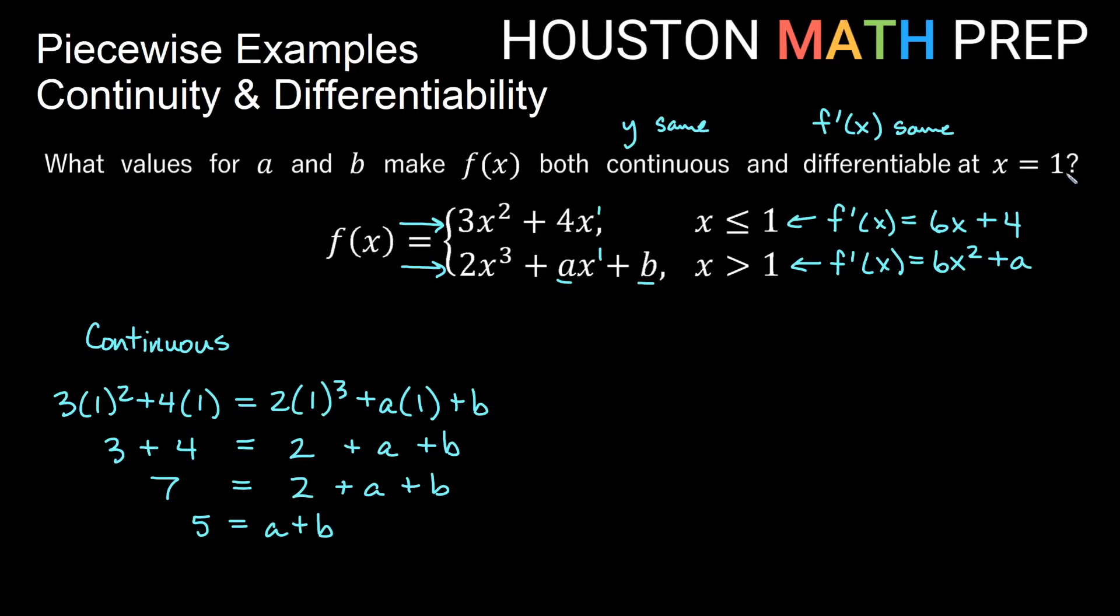Now we want these to be the same at x equals 1, and that will give us that the function is also differentiable. So doing the differentiable part, plugging in x equals 1 to both of these things here. So we would get 6 times 1 plus 4 is equal to 6 times 1 squared plus a. I don't have any b left once I did the derivative here. So here I'll get 6 plus 4, that would be 10, is equal to 6 times 1, which would be 6 plus a. Now I think we can tell here that I can actually solve this one for a. If I subtract 6 from both sides, then that tells me that a is equal to 4. So I know that a is equal to 4.